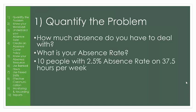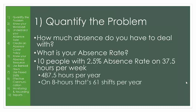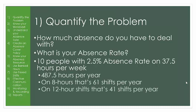So if you have 10 people with an absence rate of 2.5%, how much absence do you have to deal with each year? 10 people times 37.5 hours times 52 weeks times 2.5% is 487.5 hours per year. If you work 8-hour shifts, that's 61 shifts per year. If you work 12-hour shifts, that's 41 shifts per year.